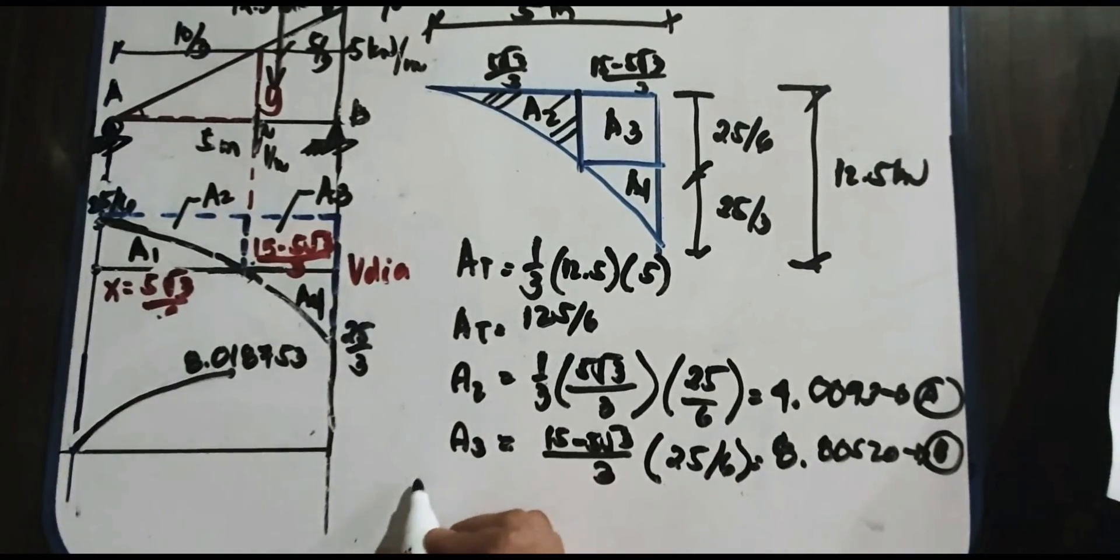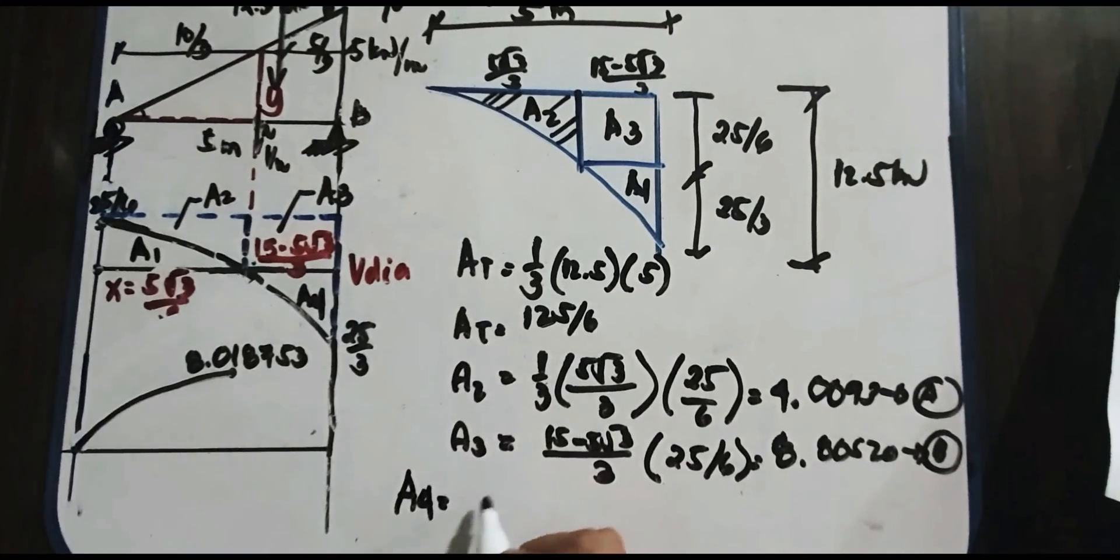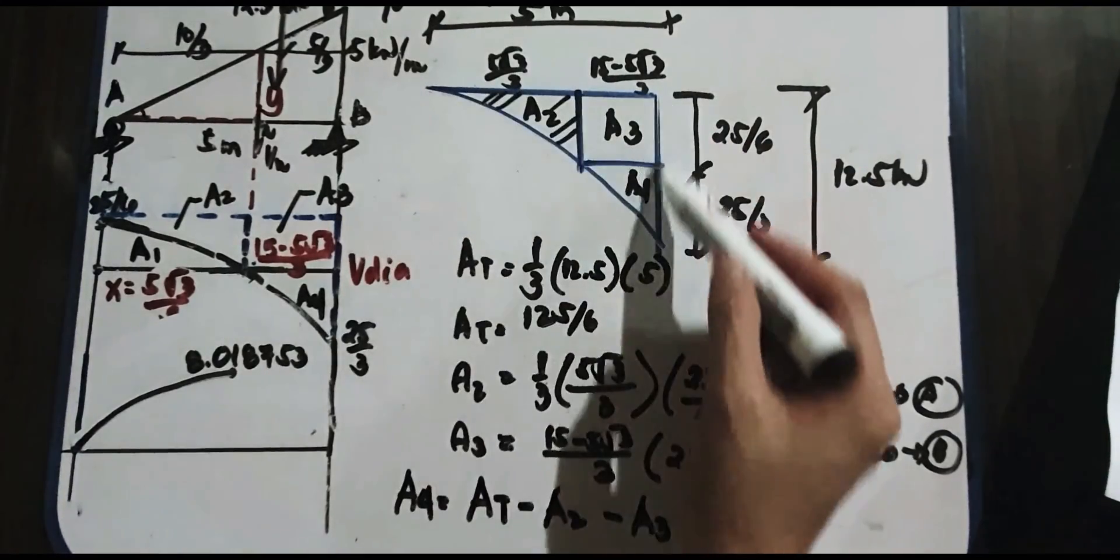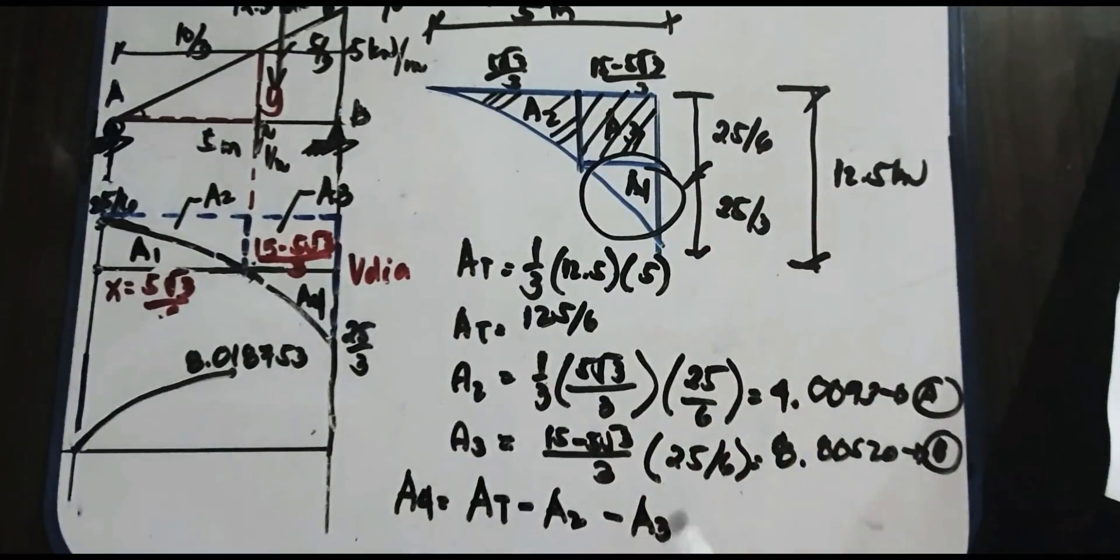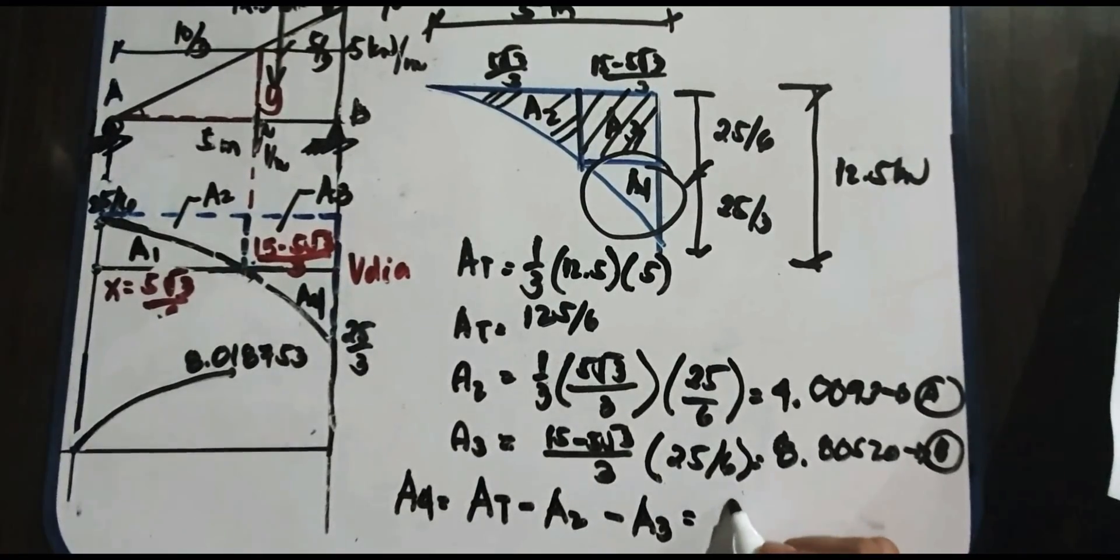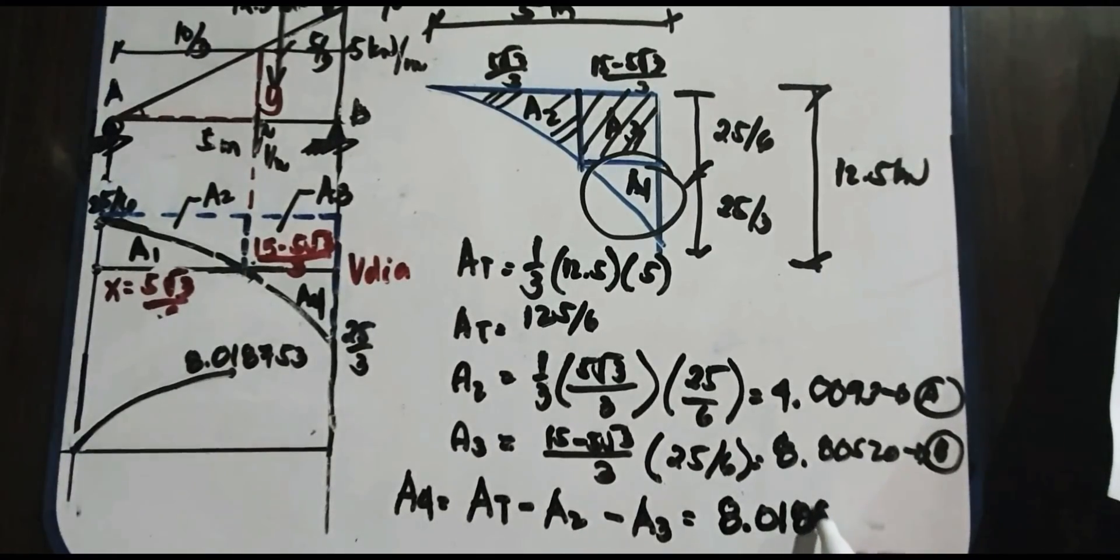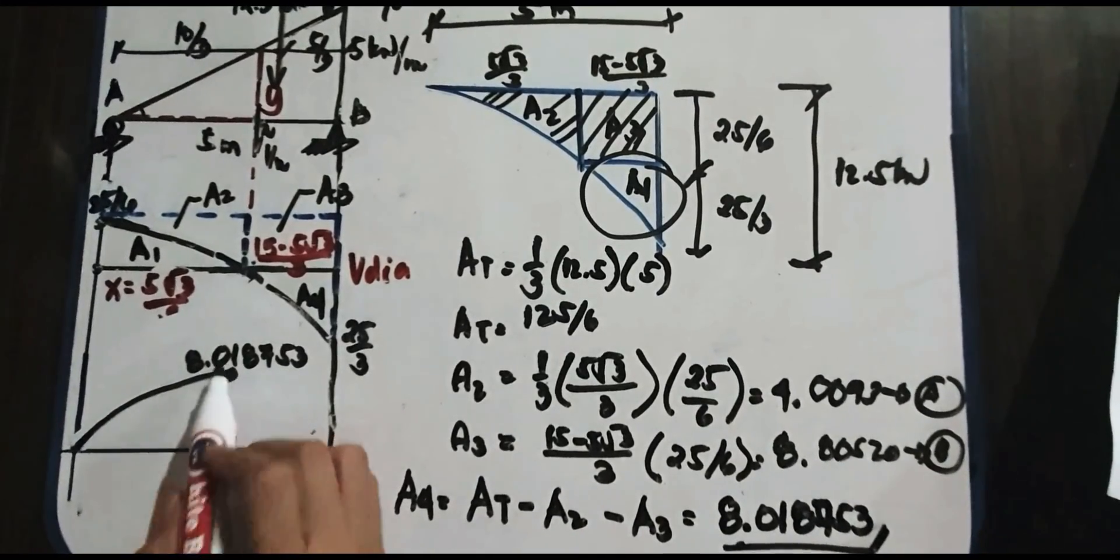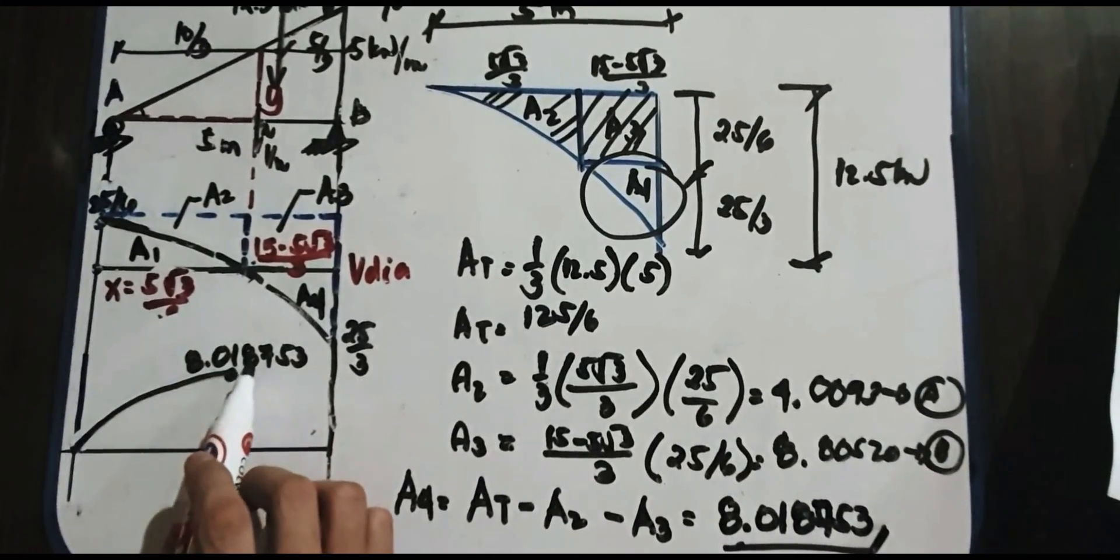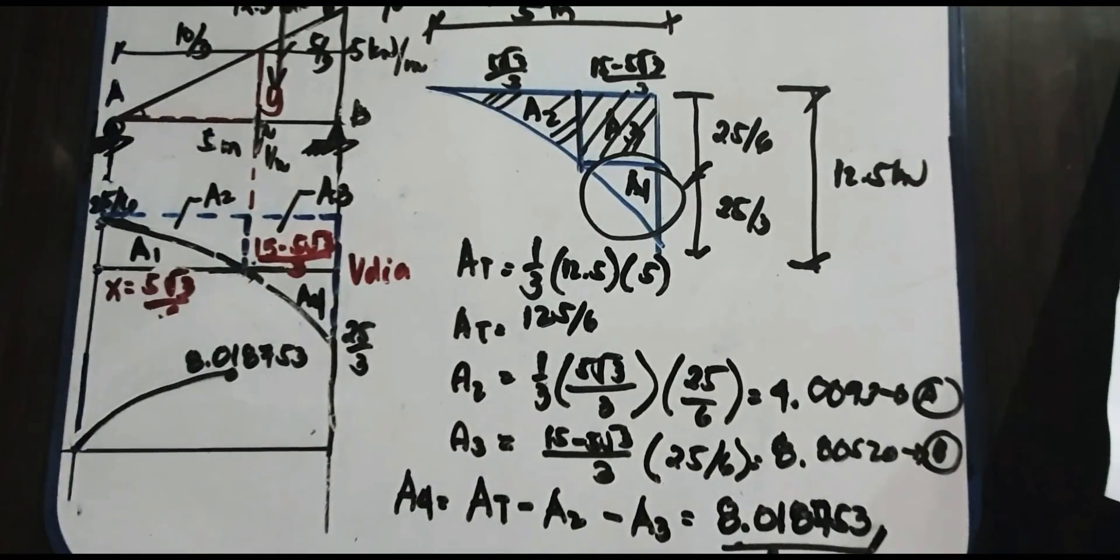Area 3, area 4. So we have area 4, that is equivalent to your area total, minus natin ng area 2, minus ng area 3. Imagine this total, minus area 2, minus area 3, makukuha natin yung A4. So what is your A4? So that is equivalent to 8.018753. So equivalent yan is, mag-0 na dito. So 8.018753 minus 8.018753 is equal to 0.